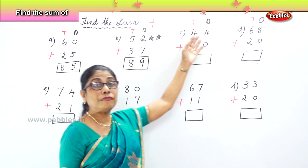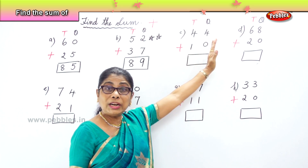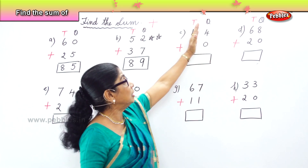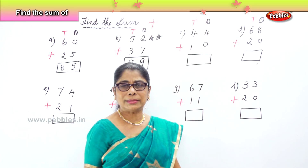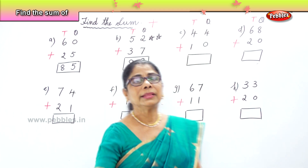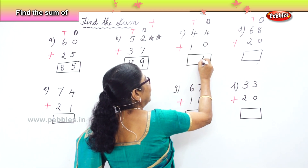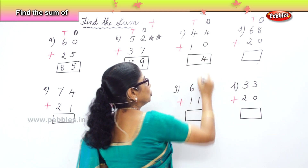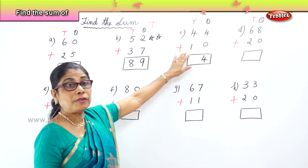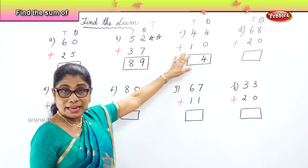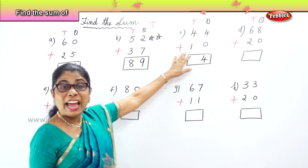Find the sum of 44 and 10. Now we look at the ones place. What do we have? In the ones place we have 4 ones and 0 ones. Any number plus 0 is the number itself, so 4 plus 0 is 4. Very good. So you have 4 ones. Now you look at the tens place. You have 4 tens and 1 ten. 4 plus 1 is 5. You have 5 tens.